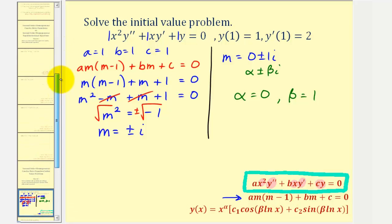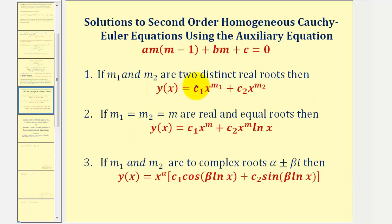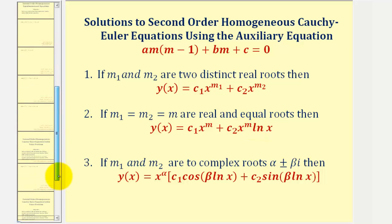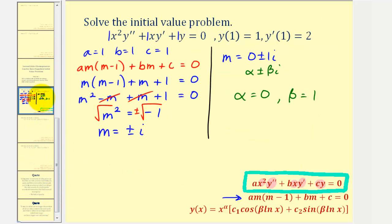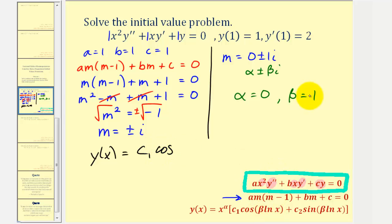Just to review: if we had two distinct real roots, we'd use one form of the general solution; if we had two real equal roots, we'd use another form. Going back to our example, the general solution is y of x equals x to the zero power, which is one, so we leave that off. We have c sub one times cosine of beta times natural log x, and since beta is one, it's just natural log x, plus c sub two sine of natural log x.